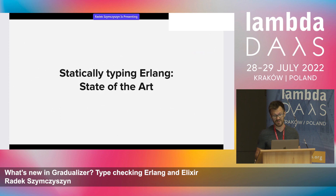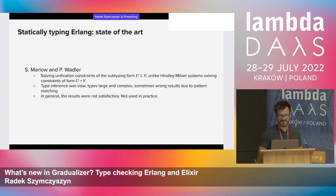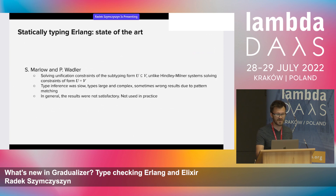Looking at existing type checkers for Erlang: the first work was done by Simon Marlow and Philip Wadler. They tried using a system solving unification constraints of the subtyping form, unlike usual Hindley-Milner systems which solve equality constraints. They applied it to significant Erlang codebases, but results were not fully satisfactory — inference was slow, inferred types were large and complex, and sometimes incorrect due to complex pattern matching. So this tool is not widely used in practice.